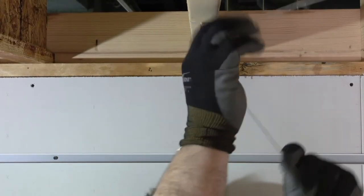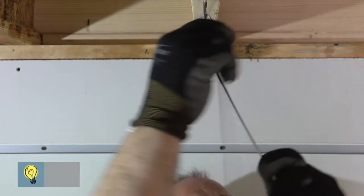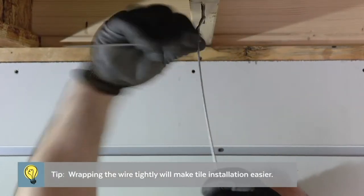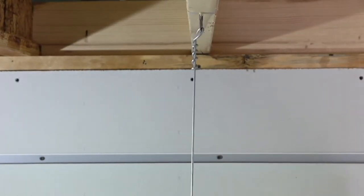Bend and thread the hanger wire through the hole in the lag screw. Allow 12 inches of wire through the lag hole, which will provide you enough wire to hold and wrap. Twist the wire around itself 3 times. Cut off any excess wire.